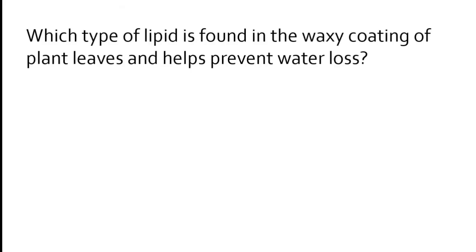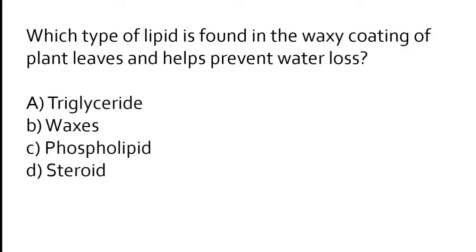Which type of lipid is found in the waxy coating of plant leaves and helps prevent water loss? Triglyceride, wax, phospholipids, or steroid? The correct answer is option B: wax is the type of lipid found in the waxy coating of plant leaves and helps prevent water loss.